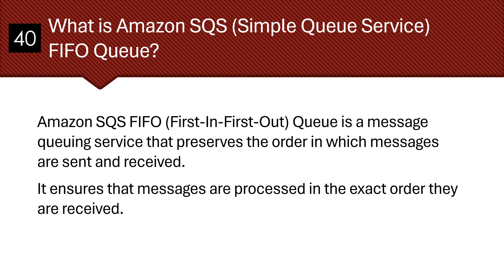What is an SQS FIFO Queue? Amazon SQS First In First Out Queue is a message queuing service that preserves the order in which messages are sent and received. It ensures that messages are processed in the exact order they are received.